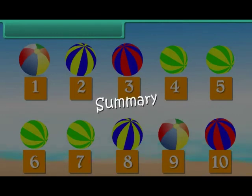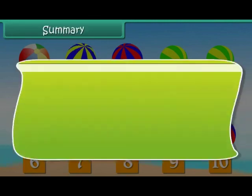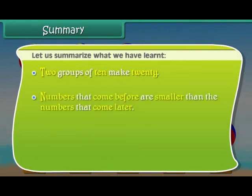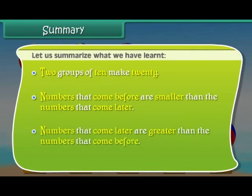Summary. Let us summarize what we have learned. Two groups of 10 make 20. Numbers that come before are smaller than the numbers that come later. Numbers that come later are greater than the numbers that come before.